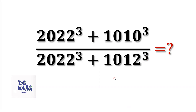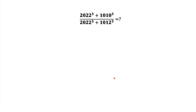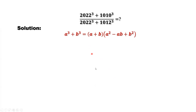How to solve this kind of problem? Do we have a formula to use? This is an important formula. We can use this formula to solve this question. In the numerator, we can see A equals 2022 and B equals 1010. We can use this formula.